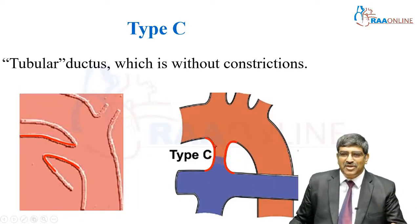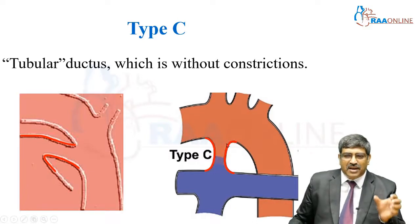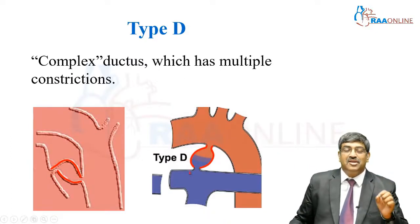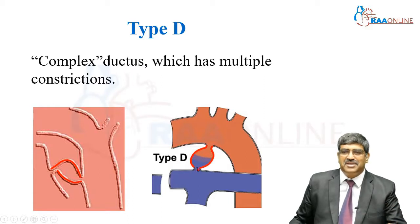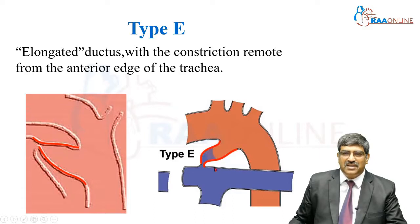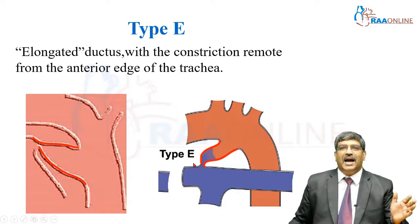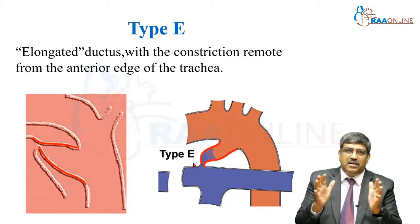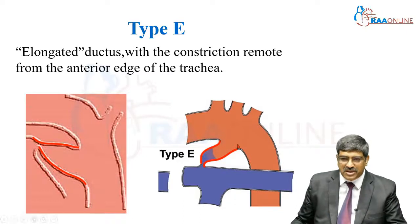Type C is the tubular ductus — a tube-like ductus without any constriction. Type D is the complex ductus, which has multiple constrictions that can be at the origin, in the middle, or at the distal part. Type E is the elongated ductus, where the constriction is removed from the anterior edge of the trachea. So we have 5 types of ductus with regard to shape.